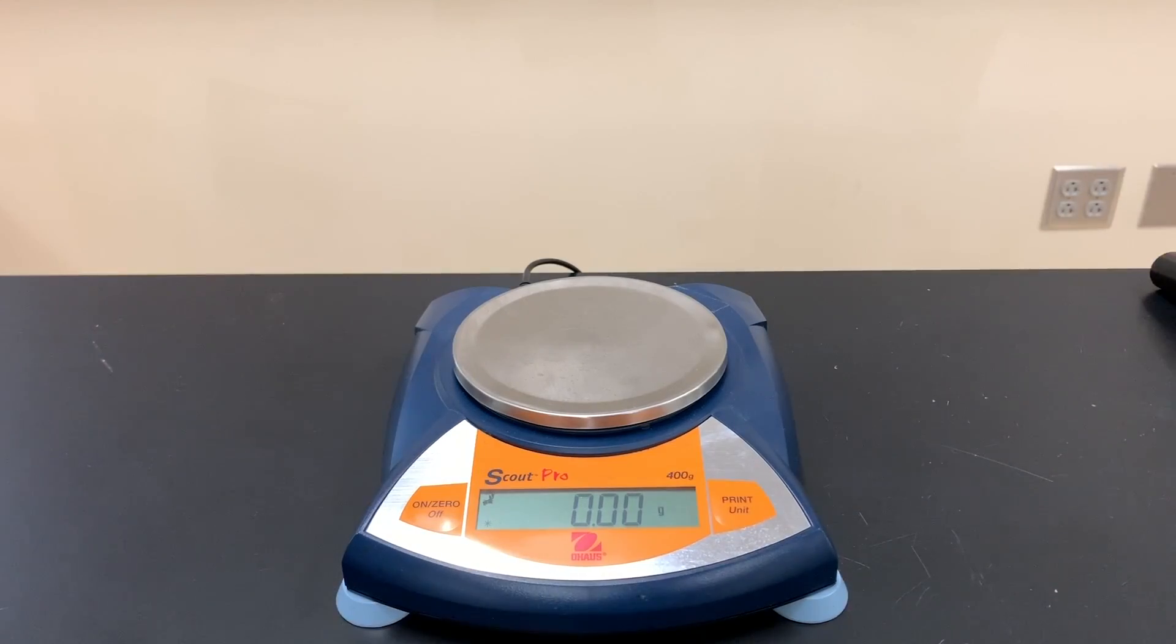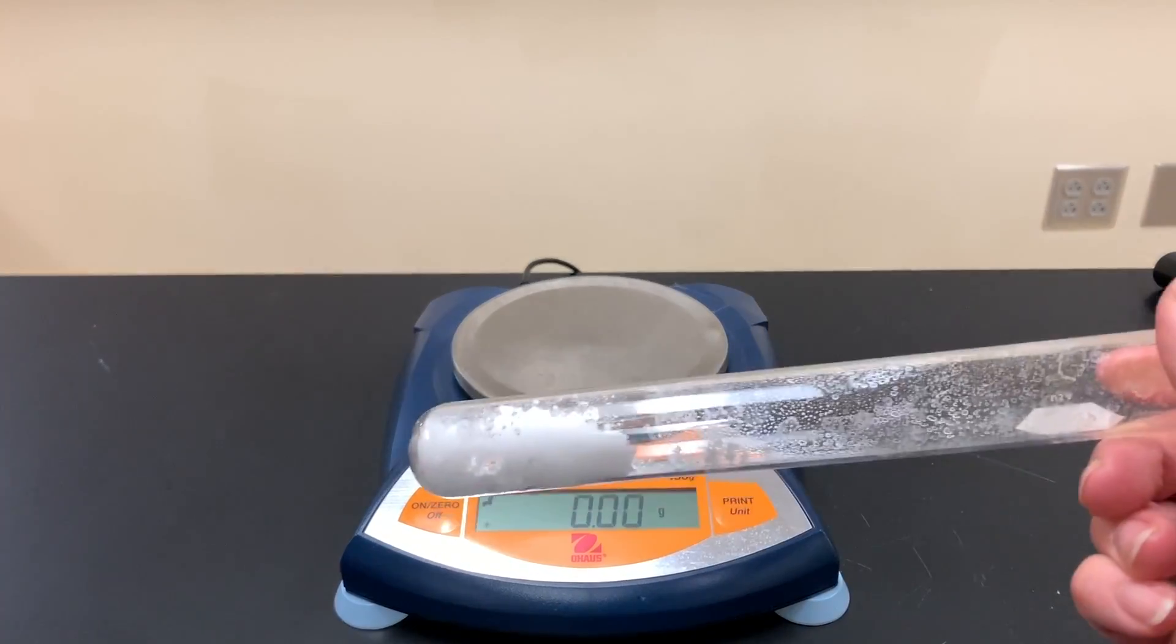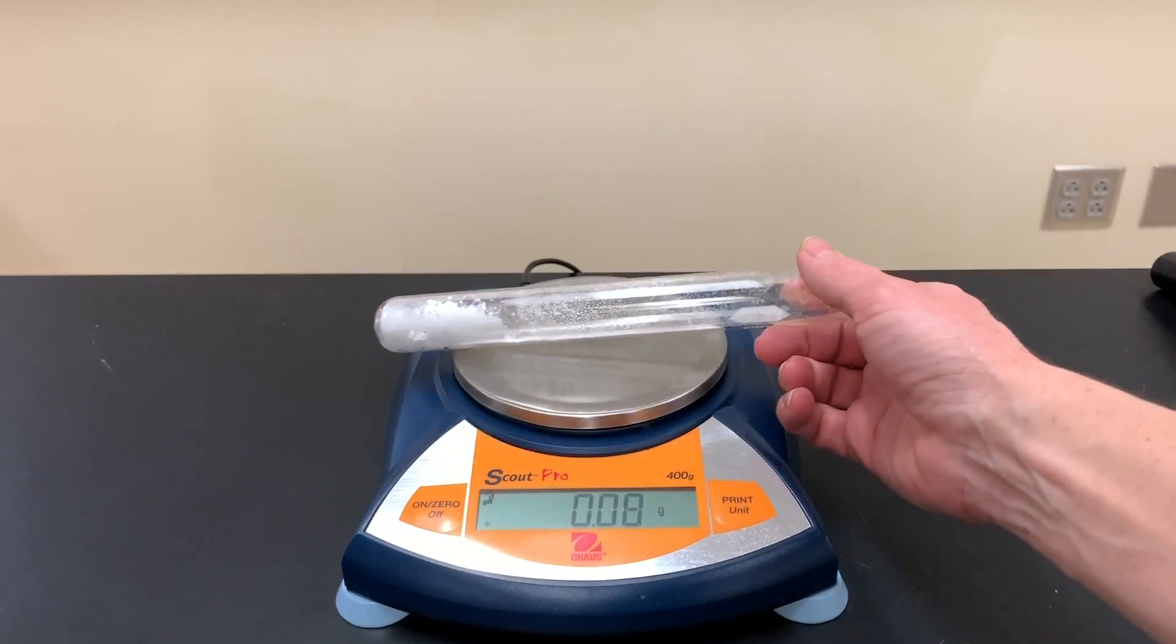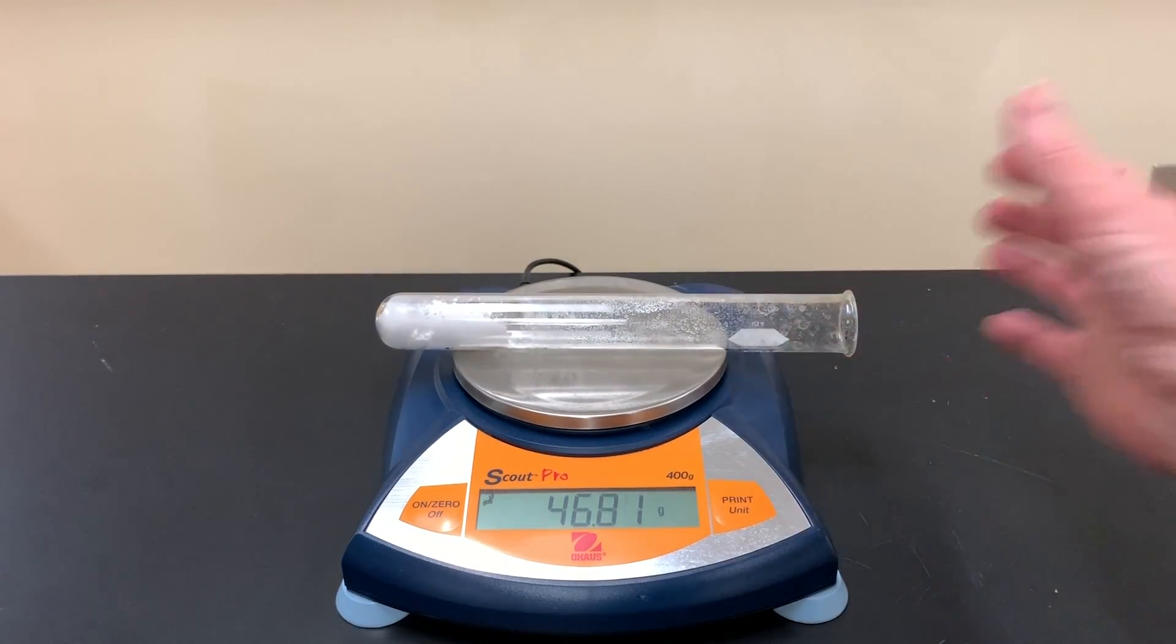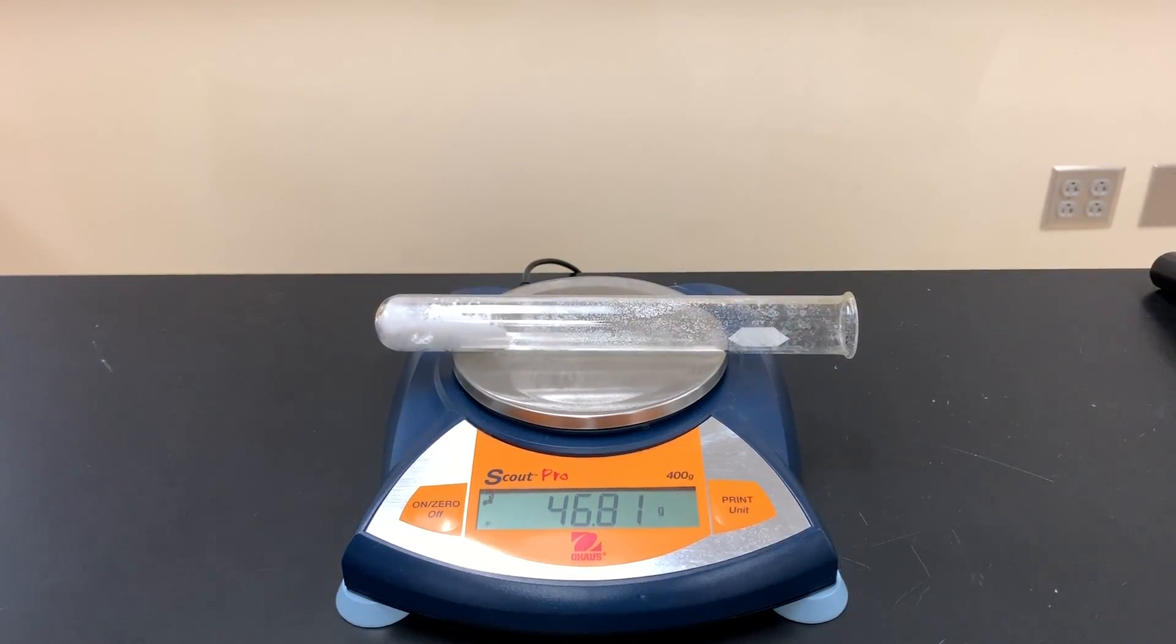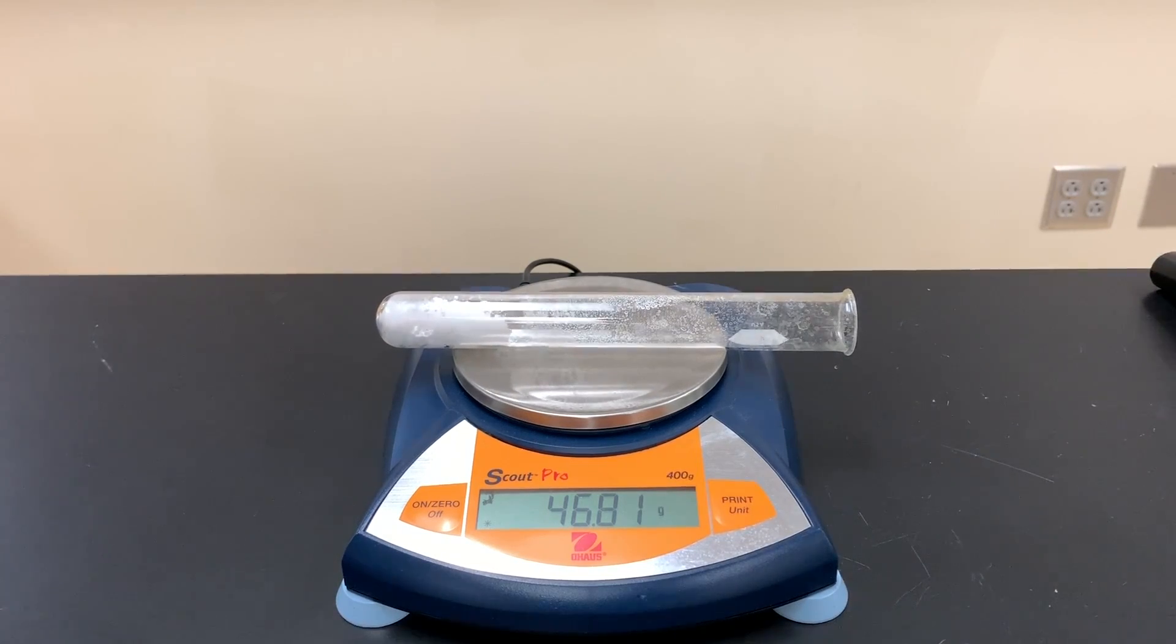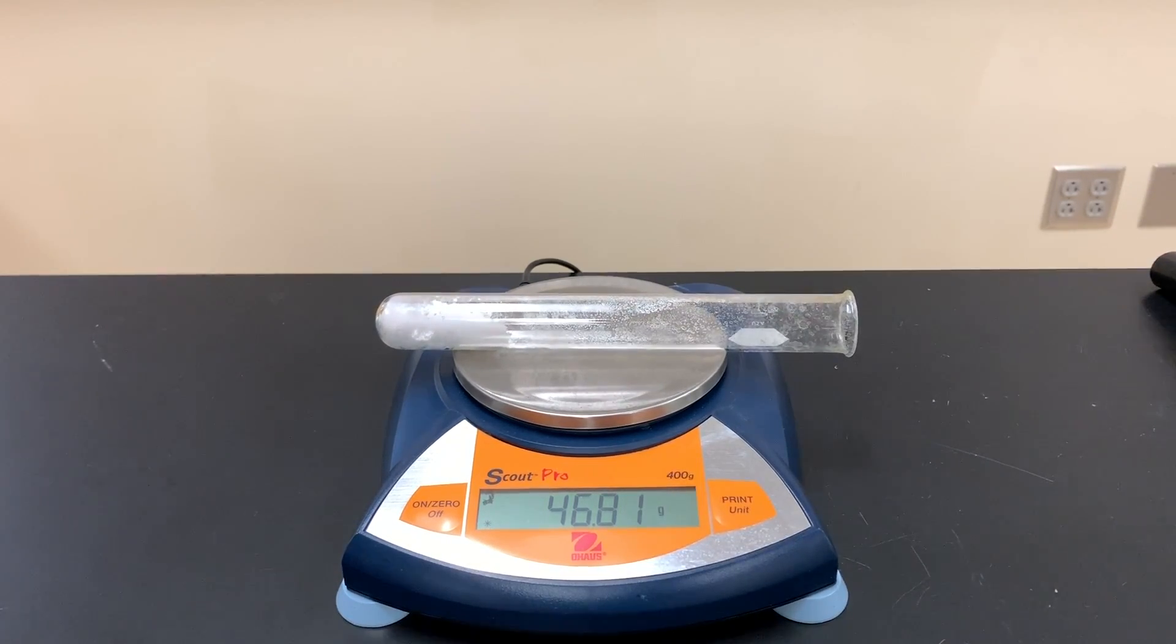So again using that same electronic balance you've used for the first two masses, you're going to take your cooled test tube and place it onto the balance. And we hope that the mass has gone down because it seems that we drove off two of the three products. We believe one's water and one's carbon dioxide.